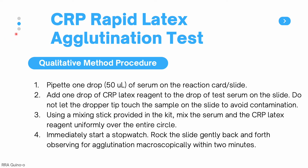There are two ways to use the CRP rapid latex agglutination test. The qualitative method detects only the presence or absence of CRP. For the procedure: pipette one drop (50 microliters) of serum onto the reaction card or slide, add one drop of CRP latex reagent without letting the dropper tip touch the sample, mix uniformly over the entire circle using the mixing stick provided, then immediately start a stopwatch and rock the slide gently, observing for agglutination within 2 minutes. A slide agitator at 100 RPM may also be used.